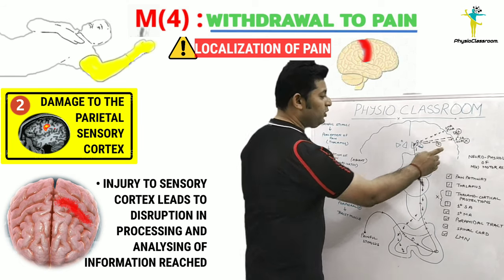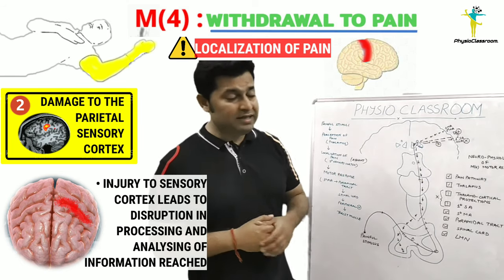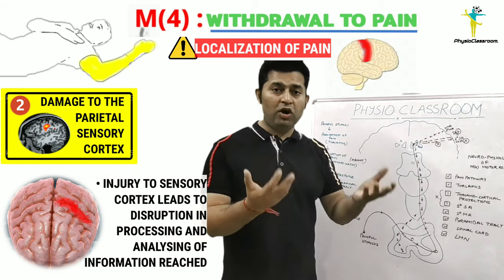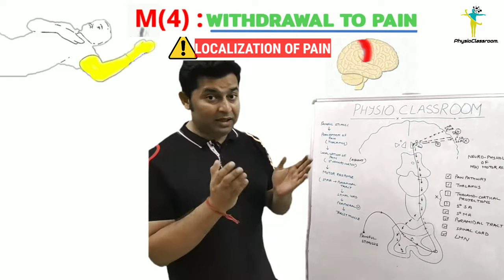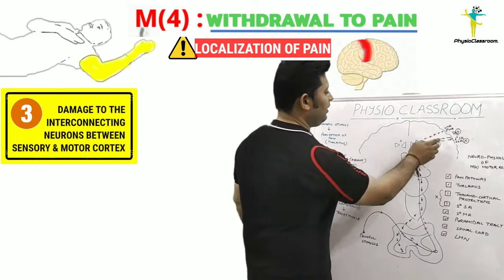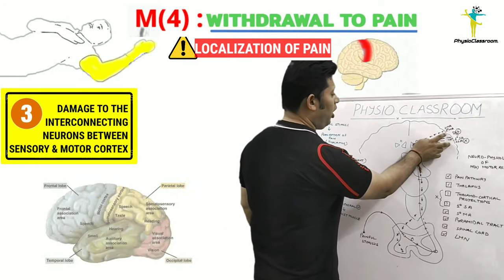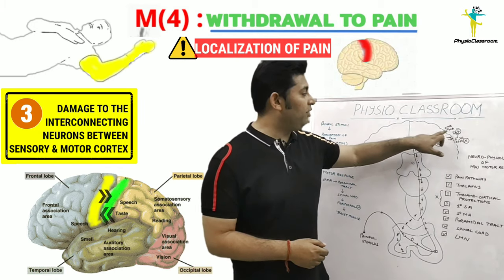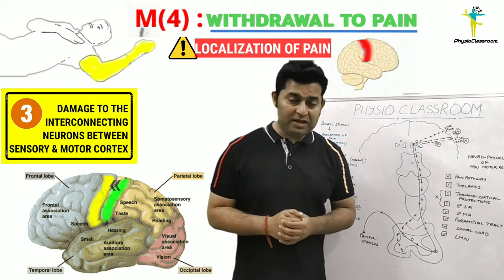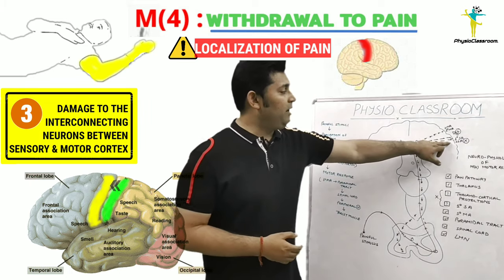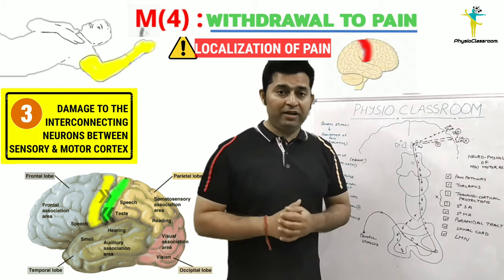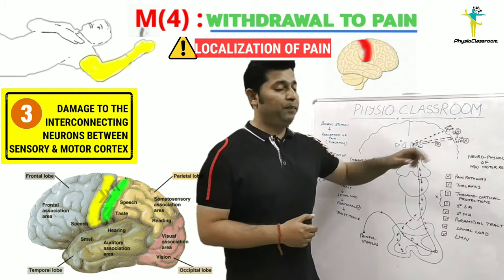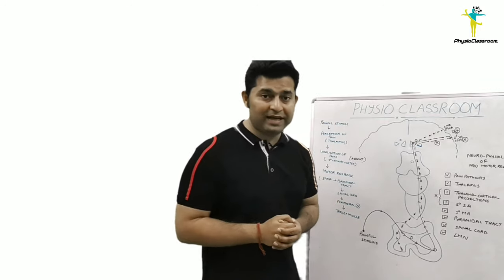The second scenario is that there could be an injury or edema to the parietal sensory cortex. Although the information is reaching the cortex, it is not getting processed and analyzed. The third case is that the interconnecting neurons or association fibers which connect the sensory area with the motor area are injured, and as a result the brain is again unable to generate purposeful motor responses to the painful stimuli.